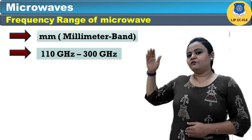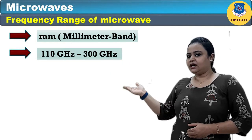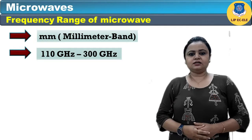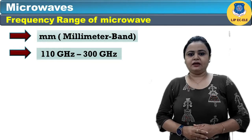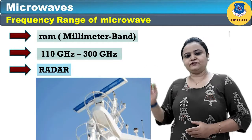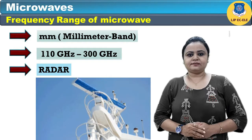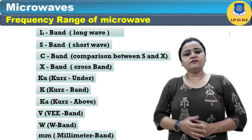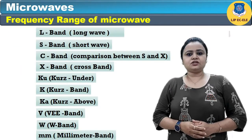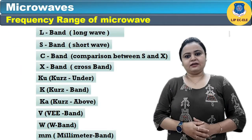The range from 110 to 300 GHz stands for the millimeter band, which is useful in radar applications. That's all with the applications of different types of frequency bands.